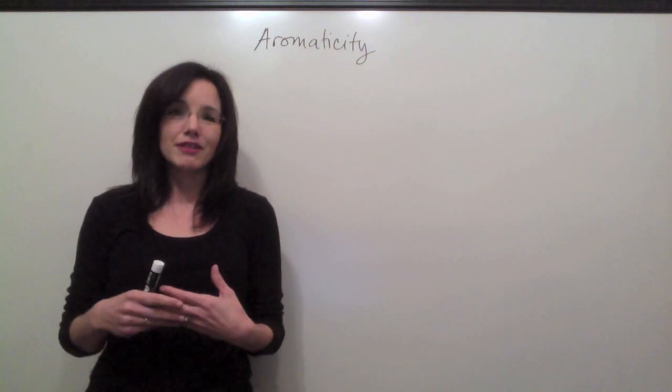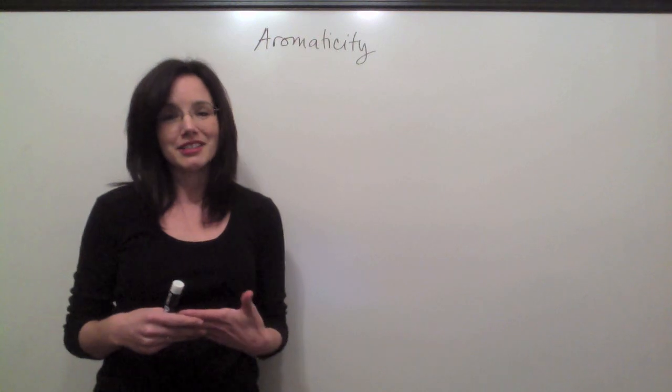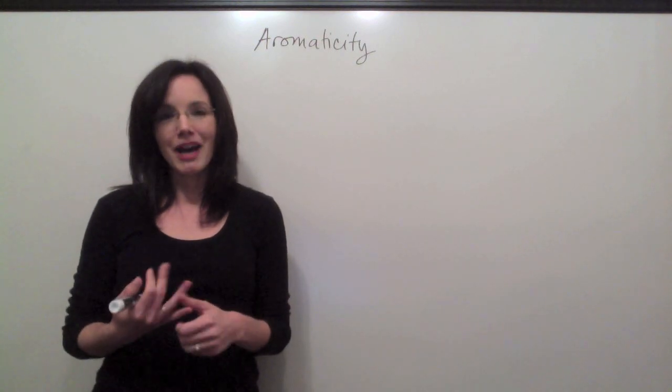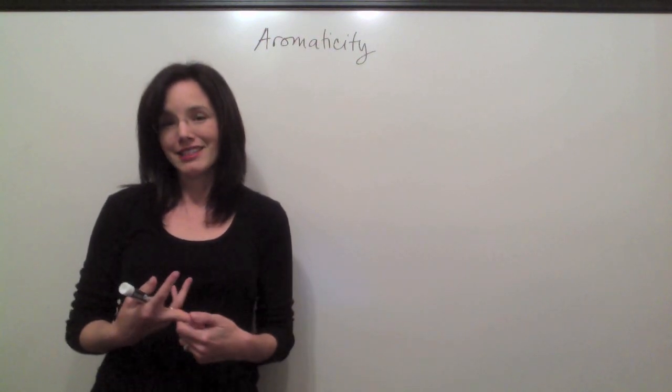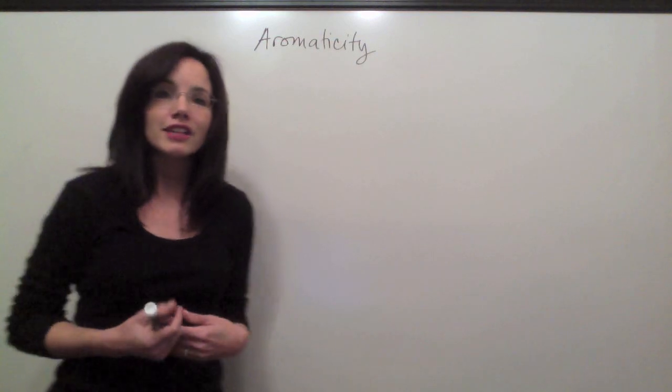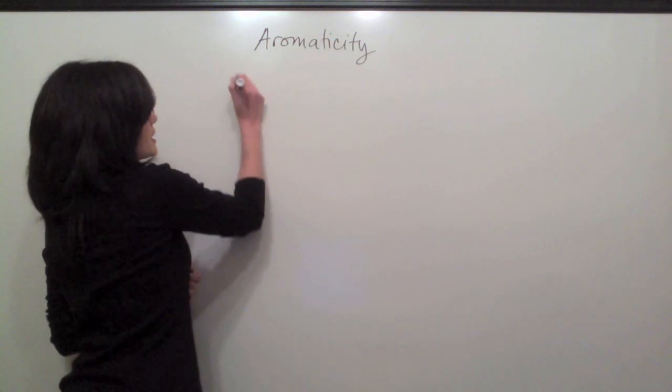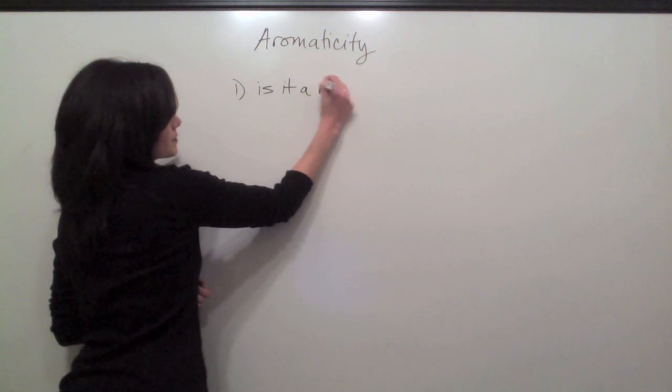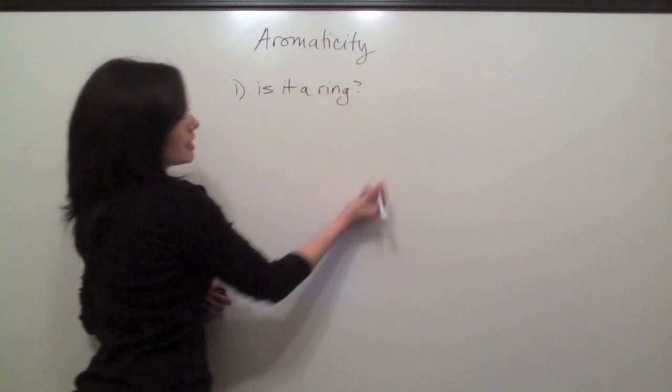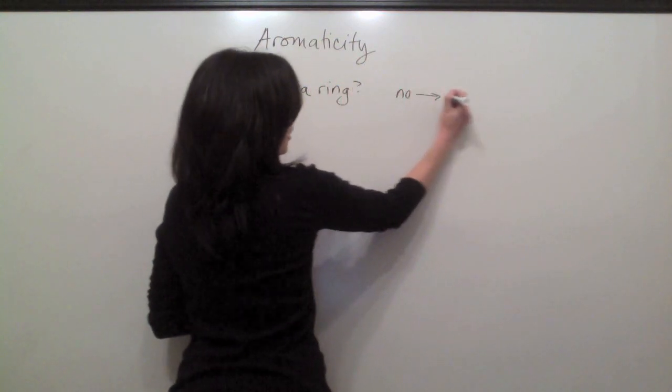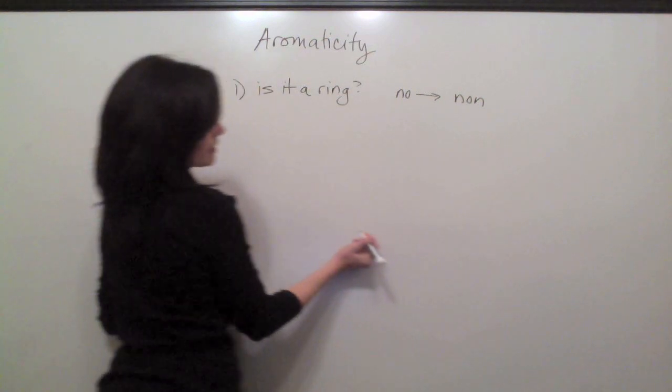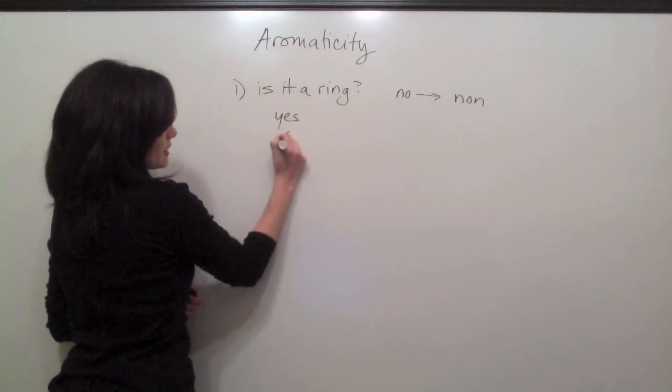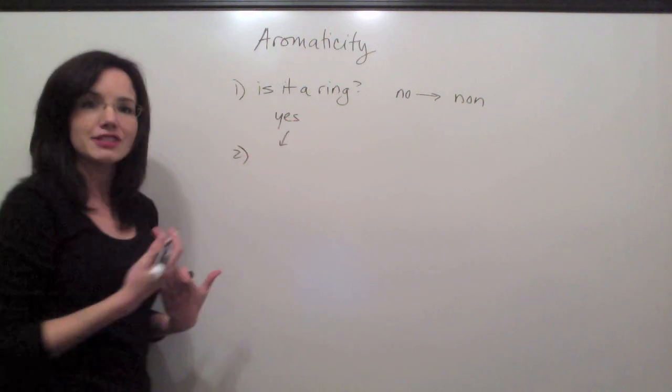So let's say that you were given an organic molecule and you're asked to determine is it aromatic, non-aromatic, or anti-aromatic. The first thing that you want to do is just ask yourself, is that molecule a ring? If it's not a ring, you already know it's non-aromatic. But if it is a ring, you're going to go on and ask yourself the second question.